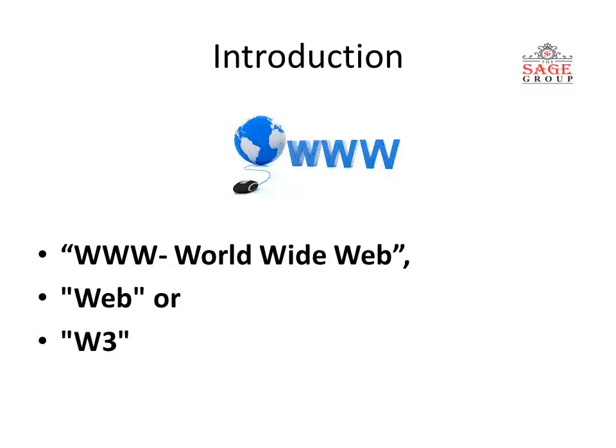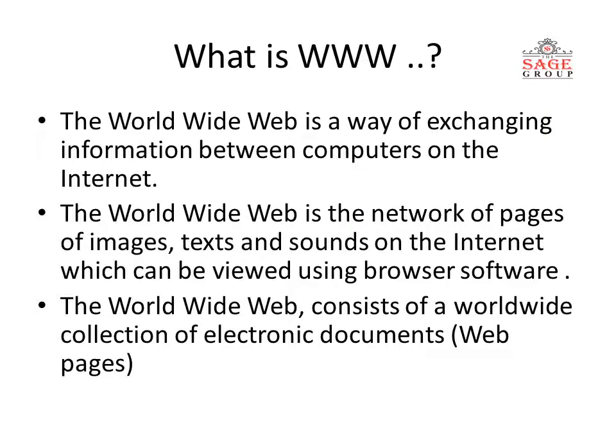The World Wide Web is a way of exchanging information between computers on the internet. Whatever information we exchange between computers and whatever data we access, we do it with the help of the World Wide Web — that is, WWW. The World Wide Web is the network of pages, images, text, and sounds on the internet.